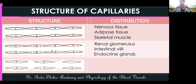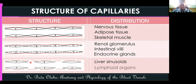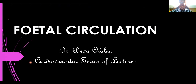Sinusoidal capillaries, also called discontinuous capillaries, have a discontinuous basement membrane and gaps between the endothelial cells. These are found in the liver and lymphoid organs.